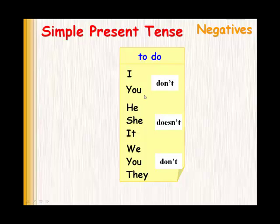I don't, you don't, he doesn't, she doesn't, it doesn't, we don't, you don't, they don't. If you learn at least he doesn't, she doesn't, it doesn't by heart, you'll know that the rest take don't.